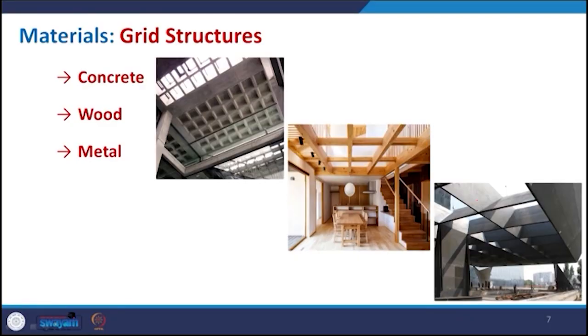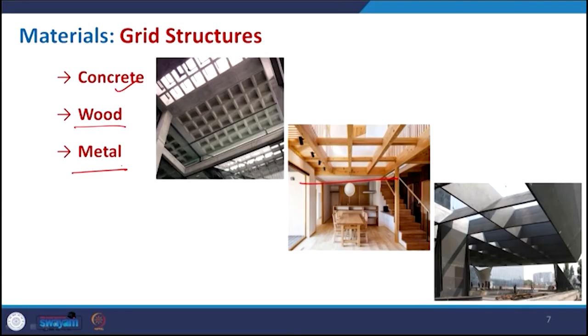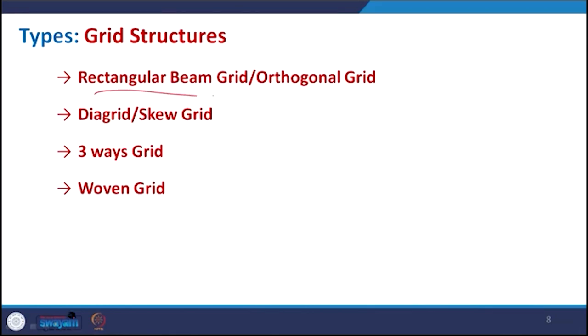Coming to the materials to be used for the grid — RCC reinforced cement concrete can be used; wood can also be used to make structures, especially in interiors, creating something that is structurally stable as well as aesthetically pleasant. Metal grid is also used for industrial projects and some office buildings or shopping malls. Coming to the types of grid structure, depending on the arrangement, they can be classified as: rectangular beam grid or orthogonal grid, diagrid or skew grid, three-way grid, and woven grid.